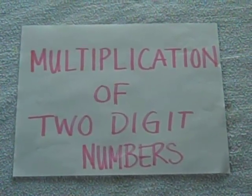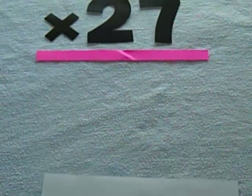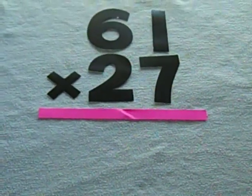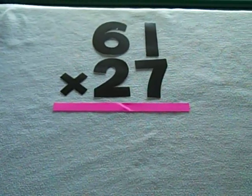Multiplication of Two-Digit Numbers. 61 times 27.